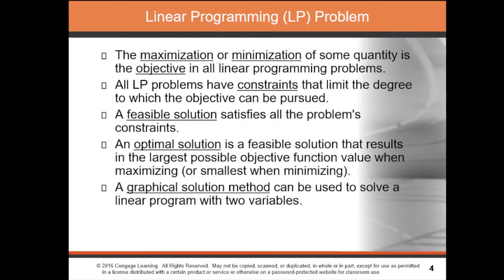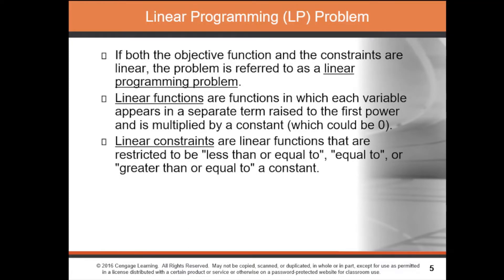If both the objective function and the constraints are linear, then the problem is referred to as a linear programming problem. Linear functions are functions in which each variable appears in a separate term raised to the first power and is multiplied by a constant, which could be zero. If the variable is raised to the power of 2, it is no longer a linear function — it becomes quadratic.